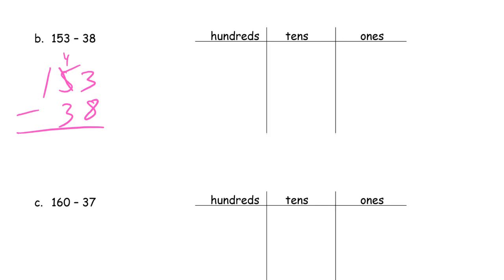4 tens left. 10 more ones. So that's 3 and 10, and 13 ones we'll have. Now we look at 13 minus 8, that's 5. 4 tens minus 3 tens, that's a 10 left. And we still have the 100.